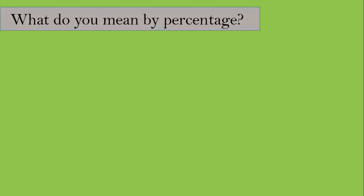So what do you mean by percentage? It means per 100 or out of 100. For example, suppose you got an examination and you got 79 out of 100 — either we say it as 79 percent or as 79 out of 100.